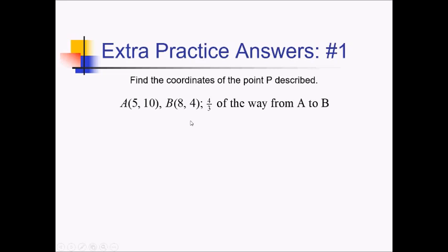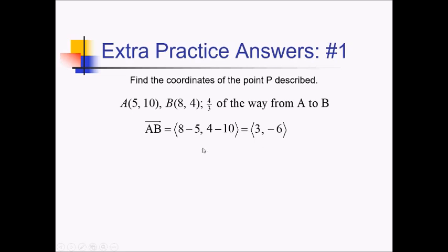So we're going to start by getting directions just to get from A to B. The component form of a vector is going to be 8 minus 5, comma, 4 minus 10. So that means we have 3, comma, negative 6 as that component form. And then to get point P, we need to have our starting point, which is 5, comma, 10, to which we will add four-thirds of this component form — so four-thirds of (3, negative 6).